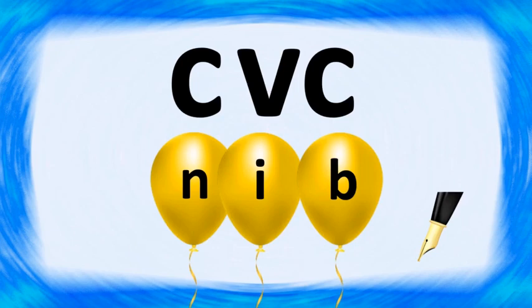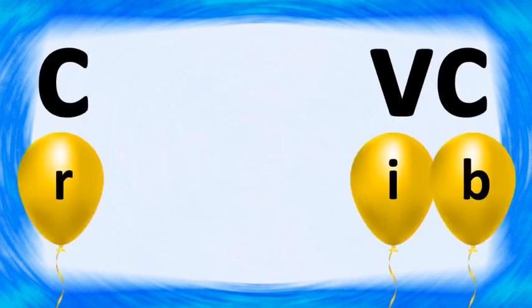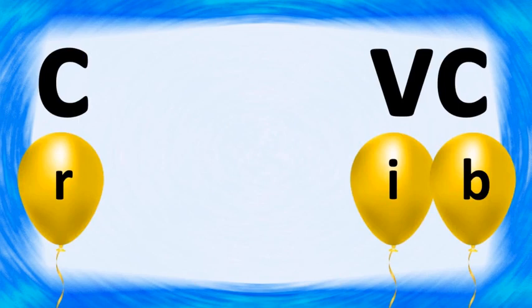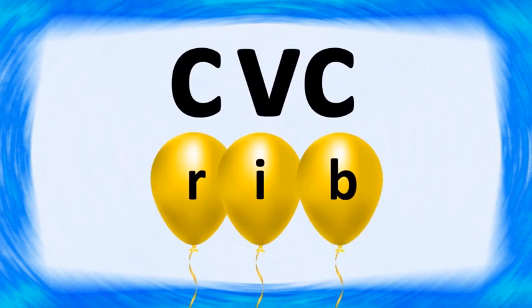The next word is R-I-B. Rib. Together, they form the word Rib. R-I-B. Rib. You have already learnt earlier what is called Rib — a set of bones which actually exist near our chest.